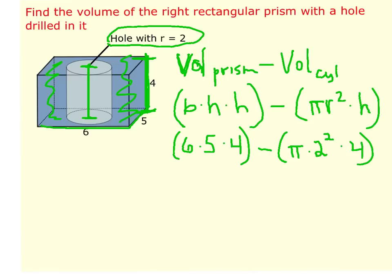So now if we multiply 6 times 5 times 4, we get 120. And in the second set of parentheses, 2² is 4 times 4 is 16 times π is 16π. And this question didn't ask us to do exact or approximate.